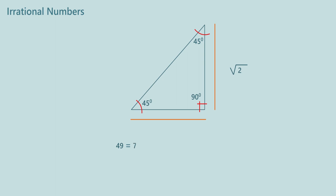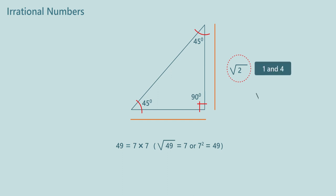We know that 49 can be written as 7 multiplied by 7, so 49 is the square of 7, or 7 is the square root of 49. To find the square root of 2, we have to find that number which when multiplied by itself will give 2 as the product. We know that 2 is not a perfect square number. Also, 2 lies between perfect square numbers 1 and 4. Square root of 1 is 1, square root of 4 is 2. That means 1 < √2 < 2.